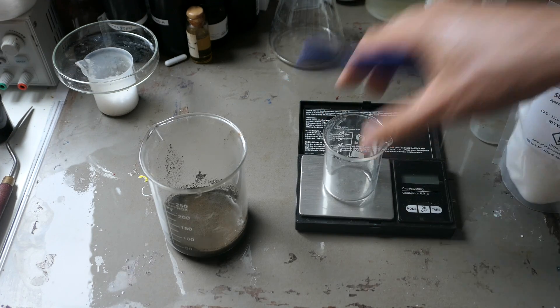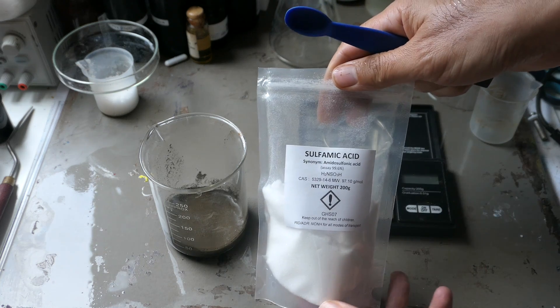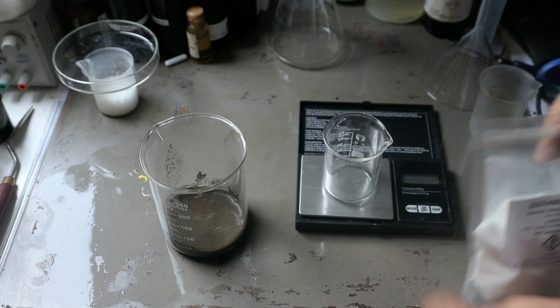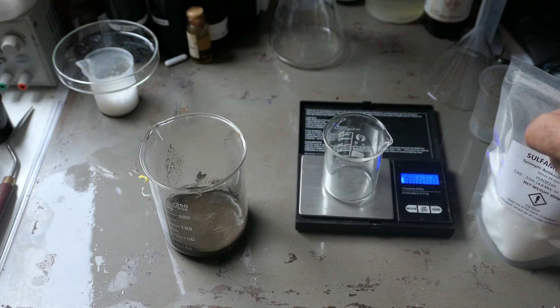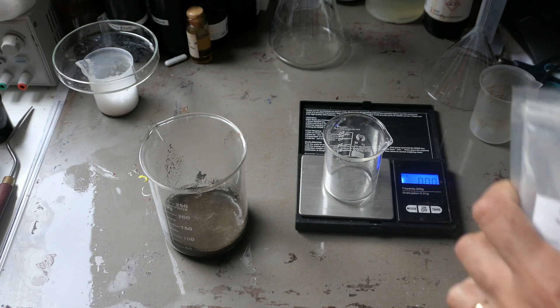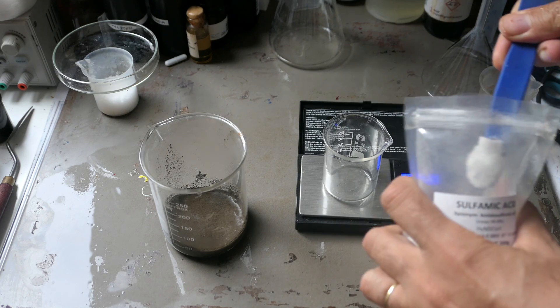Now we proceed to the preparation of silver sulfonate. We'll prepare a solution of about 8 grams of sulfonic acid in about 80 milliliters of water. This is a mineral acid found in some descalers and is fairly easy to obtain.